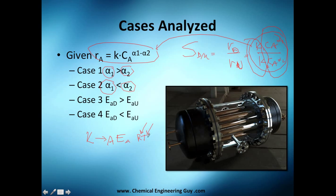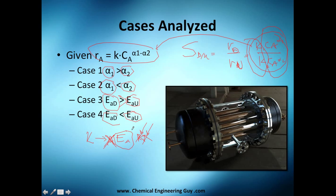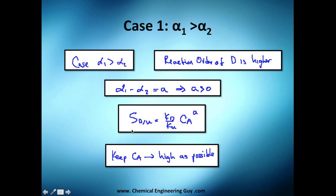Since R and T are at the same temperature, those aren't factors we can easily change. Alpha also depends on the reaction, but what we can actually change is the activation energy using a catalyst. So we're also going to analyze the activation energy of the desired product when Ed is greater than Eu and when it's less than Eu. Eventually we'll use reactors and examine what conditions optimize selectivity. Next video we'll analyze case one.